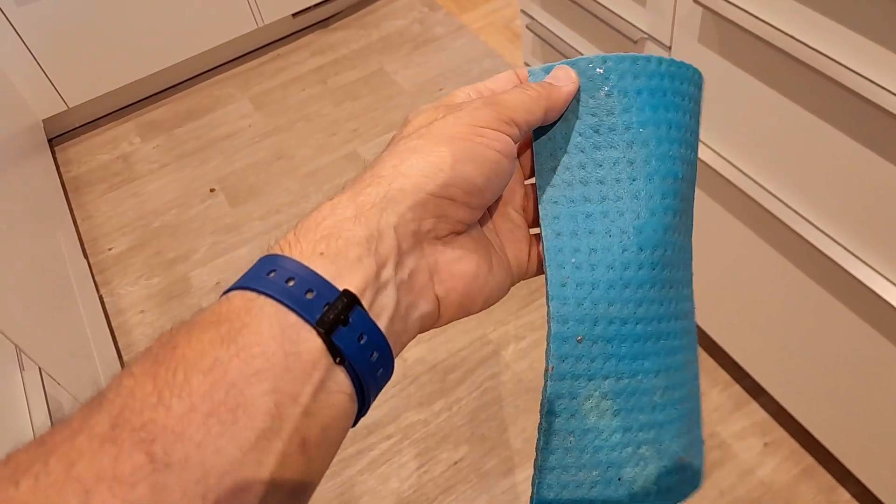Now first of all, the fact that a kitchen sponge is the home of so many bacteria is nothing new. This has been known for a long time. And honestly, you don't even need a scientific study to find that out.